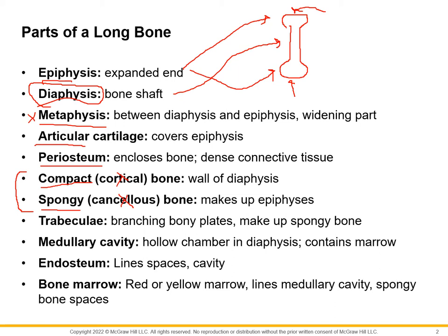Every bone is going to have a little bit of both compact and spongy bone, more in different areas. In the average long bone, compact bone — which is very densely packed — is mainly going to be in the diaphysis. As the diaphysis gets closer to the epiphyses, the compact bone thins out and more spongy bone fills in, so the epiphyses are made up more of spongy bone.